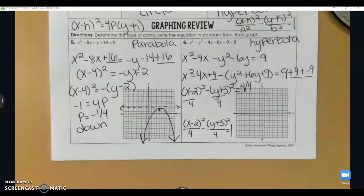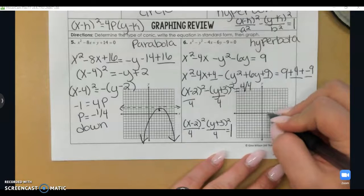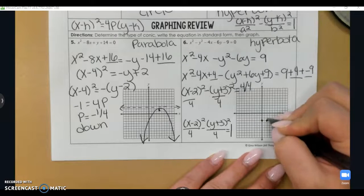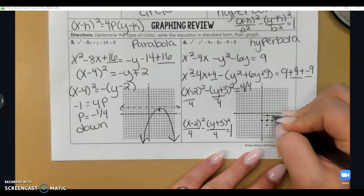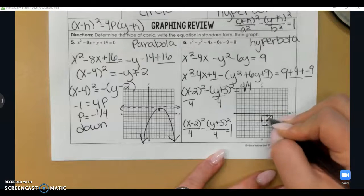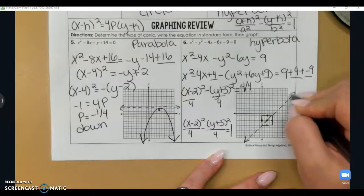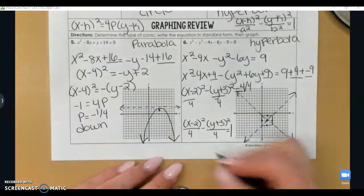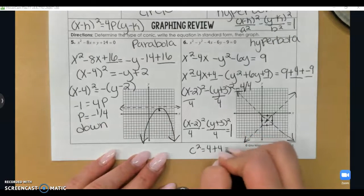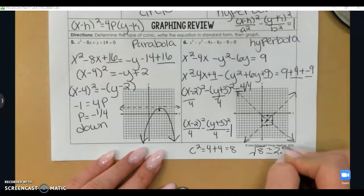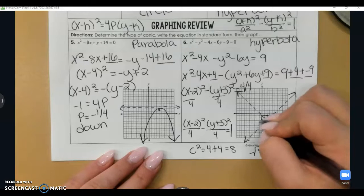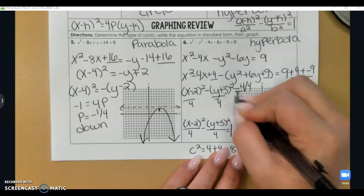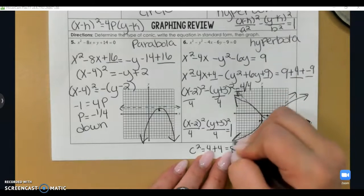The center is at 2, negative 3. Vertices are 2 away on the left and right; co-vertices are 2 away on top and bottom. Drawing the central rectangle helps plot asymptotes. For the foci, c squared equals a squared plus b squared equals 8, so c is about 2.8. The foci are approximately 2.8 left and right of center, and the curves open left and right since this is a horizontal hyperbola.